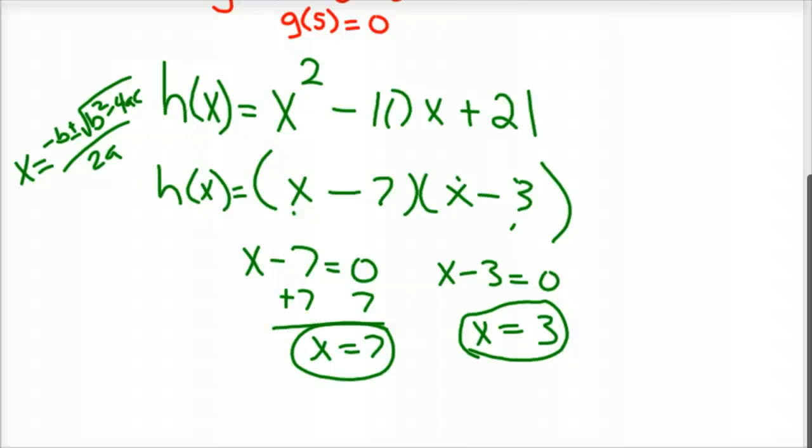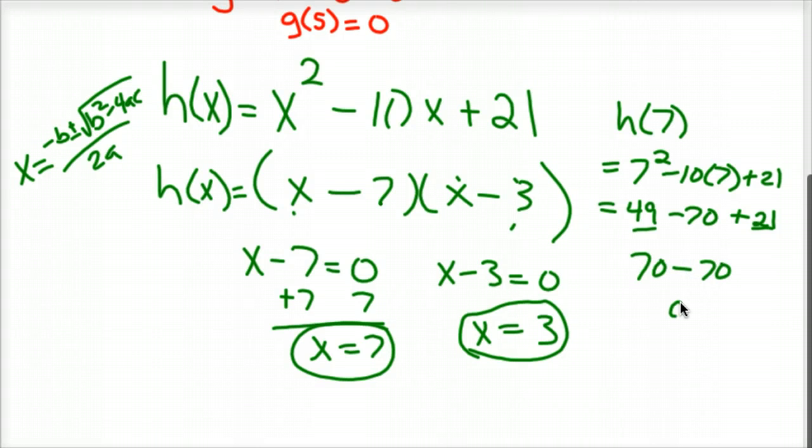If you plug 7 into that function, I'll just do that. So h(7) would be 7² - 10(7) + 21, just to show you that it works. That would be 49 - 70 + 21. 49 + 21, if you add these two together, that's 70. So you've got 70 - 70, which is 0.